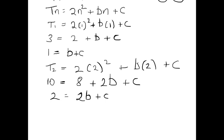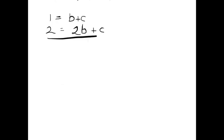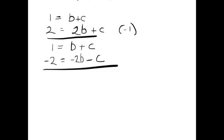Now that we have two equations with b and c, we can do simultaneous equations to find their values. We want to cancel out the c's since they have the same coefficient. We multiply the second equation by minus 1 to get minus 2 equals minus 2b minus c, then carry down the first equation: 1 equals b plus c. Adding the two equations: 1 minus 2 gives minus 1, b minus 2b gives minus b, and the c's cancel. So minus 1 equals minus b, and multiplying by minus 1 gives us b equals 1.